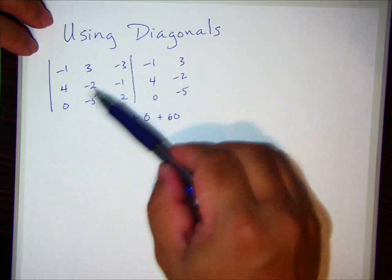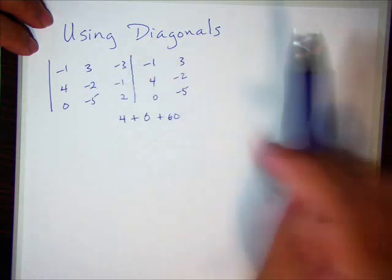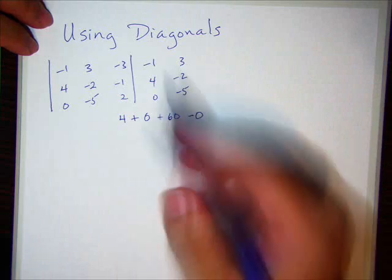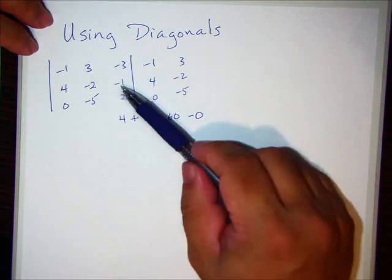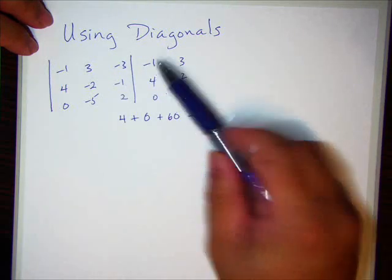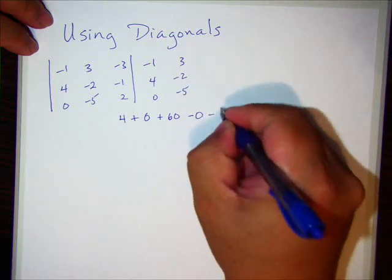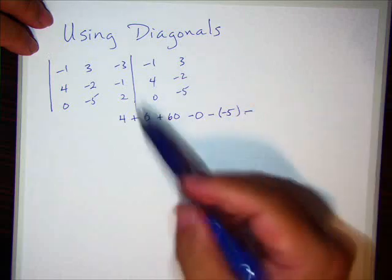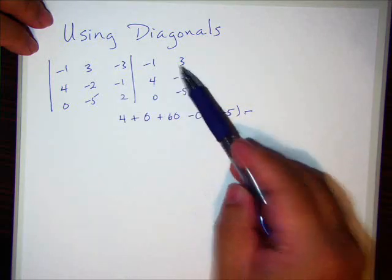And then we're going to go in the other direction. So we're going to go 0 times negative 2 times negative 3 is going to be 0, but I'm subtracting these. Not that it makes a difference with 0. Then we're going to go negative 5 times negative 1 times negative 1. So it's minus a negative 5.